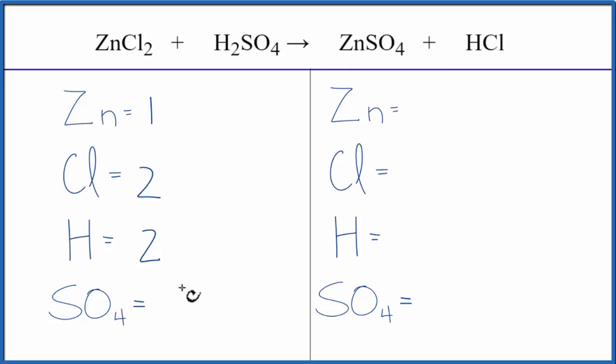Since it's on this side of the equation and that side, I'm just going to call it one item - it's called the sulfate ion. On the product side of the equation, we have one zinc, one chlorine, one hydrogen, and then one sulfate or SO4.